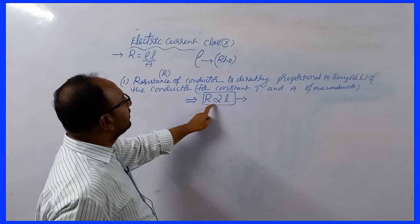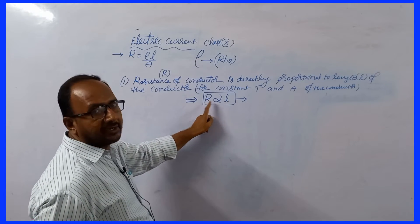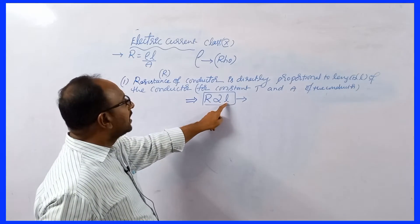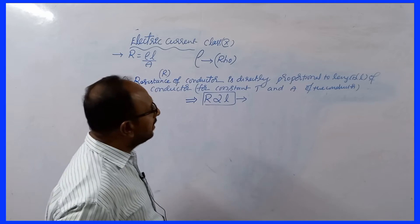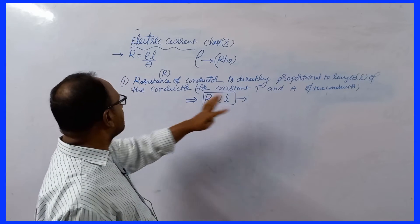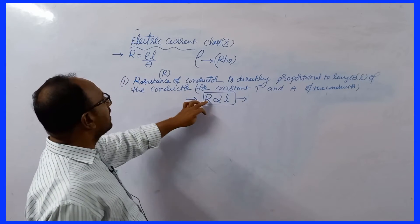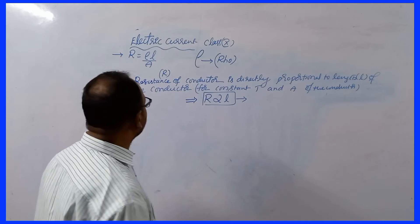Directly proportional to L means: L increases, R increases; L decreases, R also decreases. Here, L means length of the conductor and R means resistance of the conductor.